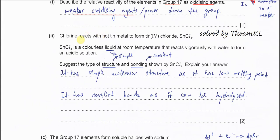Part 2. Chlorine reacts with hot tin metal to form tin(IV) chloride, SnCl4. SnCl4 is a colorless liquid at room temperature. It's already told you liquid at room temperature so it won't be giant, most likely it's telling you it's a simple structure. And it reacts vigorously with water. If it reacts with water means it undergoes hydrolysis, and most likely the bonding inside this compound will be covalent.